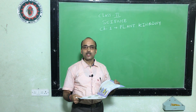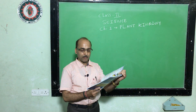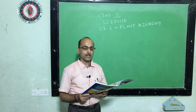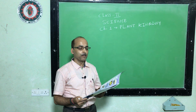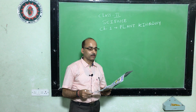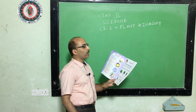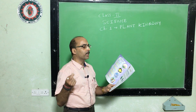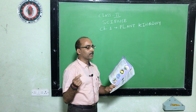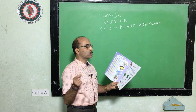Open chapter number 1, that is Plant Kingdom, page number 5. Follow the class and open the chapter at page number 5. Let us see what is inside the chapter. First: plants grow all around us. You know there are different types of plants and they grow all around us.